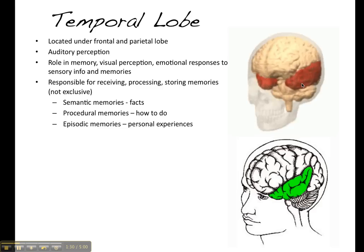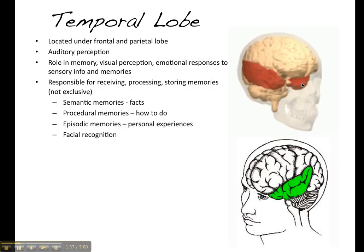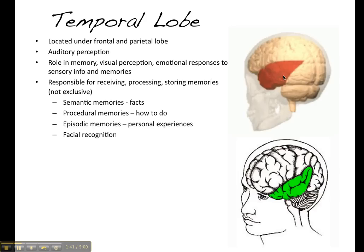Facial recognition is another role of the temporal lobe. People with prosopagnosia, which is face blindness, often have some sort of damage in the pathway leading from the visual cortex to the temporal lobe.